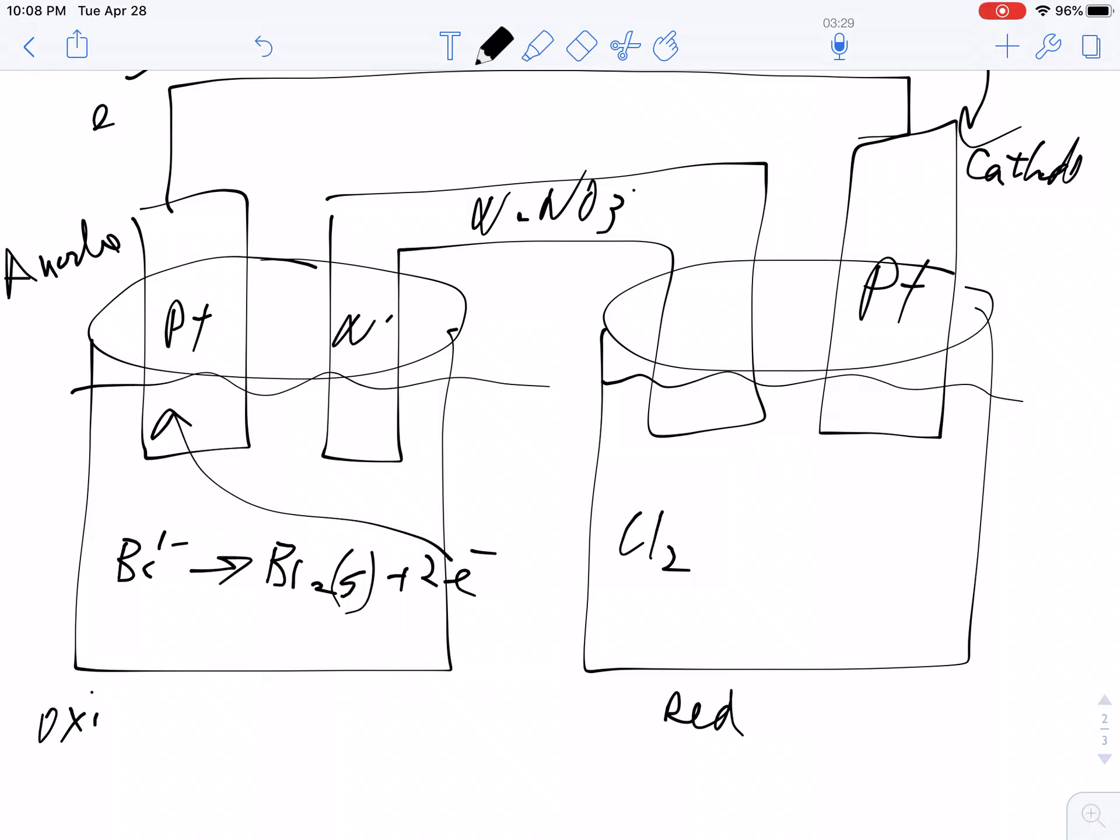A positive charge will build up on this side, so my nitrate migrates in. On this side, my electrons are coming out.